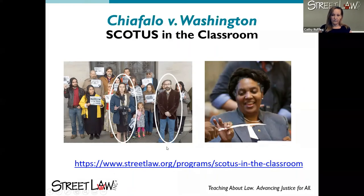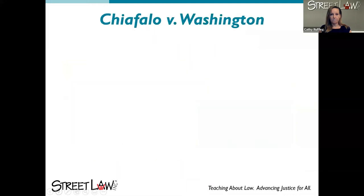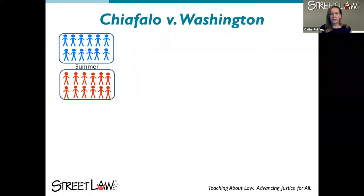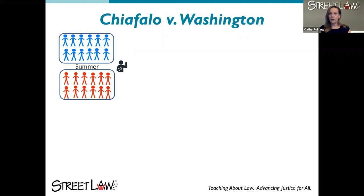Here's a quick background on the case. In the summer of 2016, before the election, Democrats and Republicans choose electors — the state of Washington has 12 electoral votes, so Democrats chose 12 electors and Republicans chose 12 electors. In Washington, electors say a pledge to vote for the person who wins the popular vote in their state if their party wins, and are informed that if they break that pledge they will receive a $1,000 fine. Our petitioners were chosen as three of the electors for the Democratic Party.